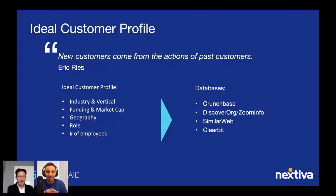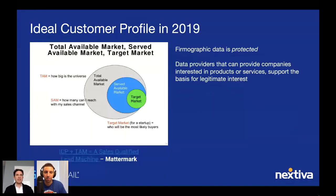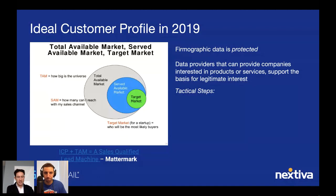What does it look like in 2019? It's a little different and improved in some areas. Before we go into privacy regulations themselves, it's important to understand that firmographic data — data about a business with no connection to an individual — the design of these privacy regulations is set up to protect individuals. Those individuals could be working at a business or could be consumers. The actual information about a business itself is largely irrelevant from a privacy standpoint.